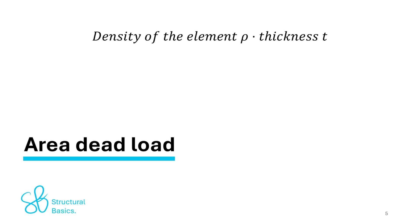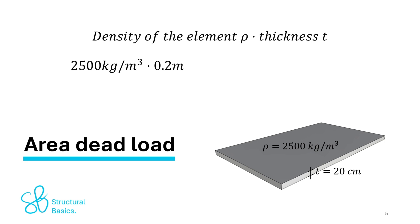the area dead load of a concrete slab with a density of 2500 kg per cubic meter and a thickness of 20 cm is calculated as 2500 kg per cubic meter times 0.2 meter equals 500 kg per square meter.